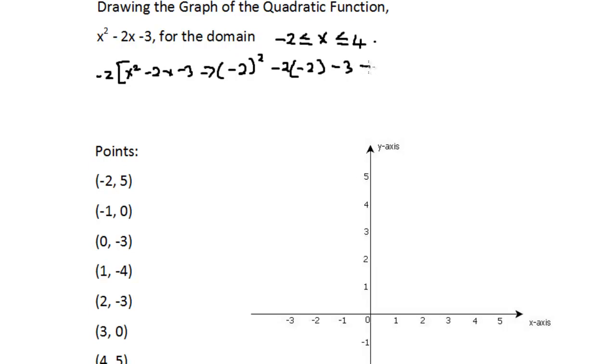And that gave us minus 2 times minus 2, that's 4. 4 and minus 2 times minus 2, that's another 4, so that's plus 4. And that is minus 3. So that is 4 plus 4, that is 8. 8 minus 3, that is 5.